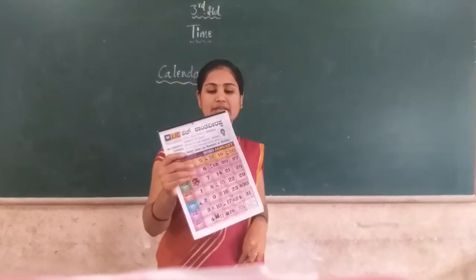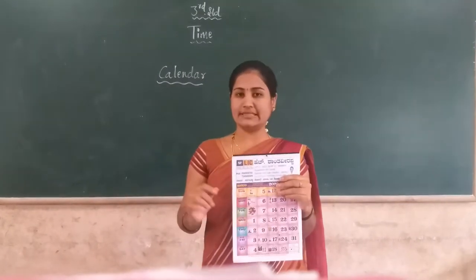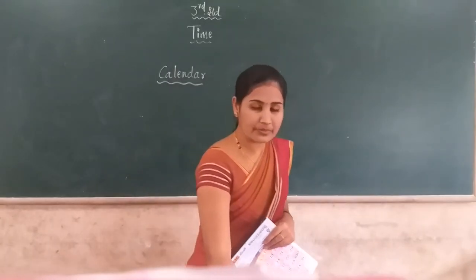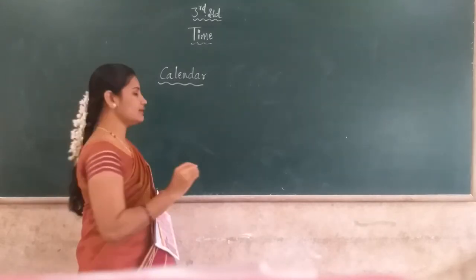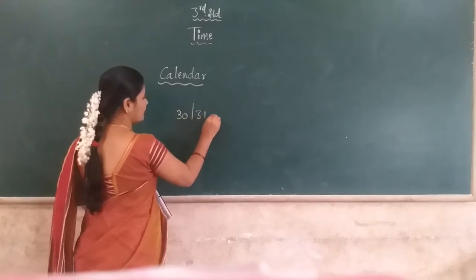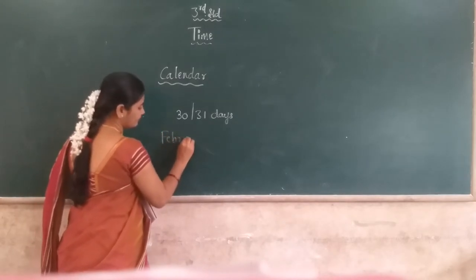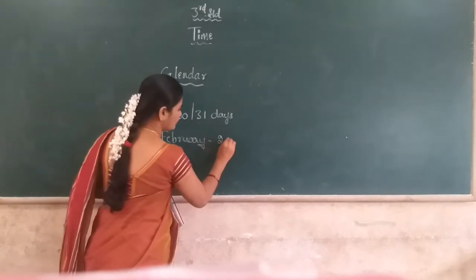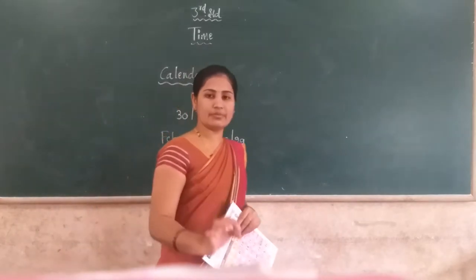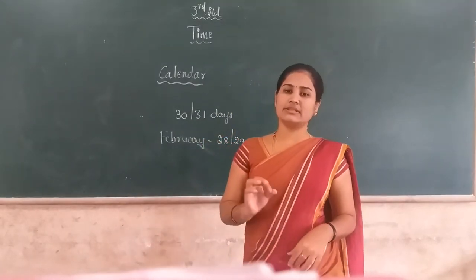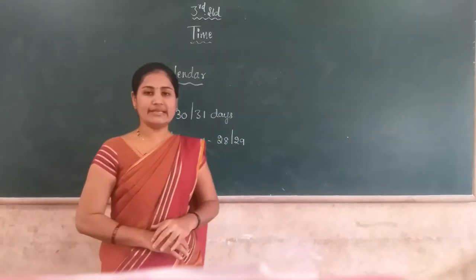Dear students, after seeing this calendar, we know that different months have different numbers of days. Except February, all remaining months have either thirty or thirty-one days. But only February has twenty-eight or twenty-nine days.